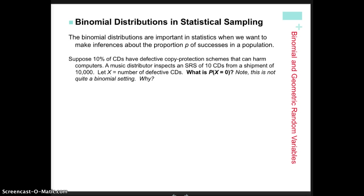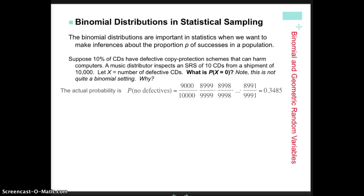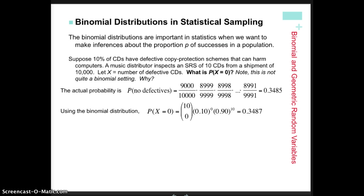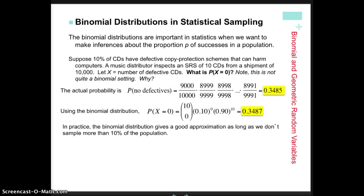Now let's talk about binomial distributions in statistical sampling and the idea of inference. Pause the video and read the example at the bottom of page 393 about choosing a simple random sample of CDs. Sometimes a situation seems binomial but isn't strictly so, because probabilities change slightly when sampling without replacement. However, if we calculate the actual probability versus using binomial, we get very close numbers. So in statistics, if the sample size is no larger than 10% of the parent population, we can use the binomial distribution as an approximation.